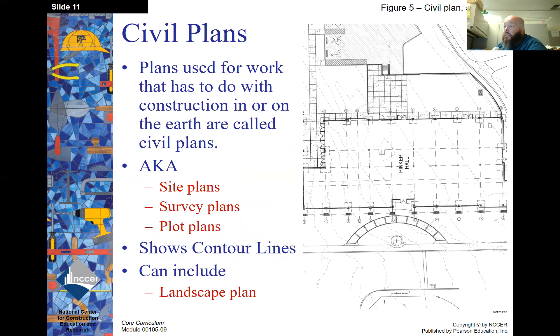Civil plans. These are plans used for work that has to do with construction in or on the earth, and they are called civil plans. Also could be known as site plans, survey plans, or plot plans. They show contour lines, which contour lines have to do with the topography of a surface, which is the elevation. If any of you guys are hikers and have looked at maps for hiking trails, it'll show contour lines and the closer the contour lines are together, the steeper the hill is.